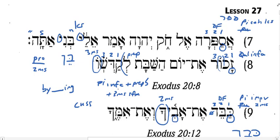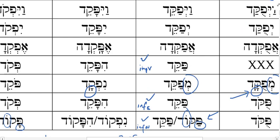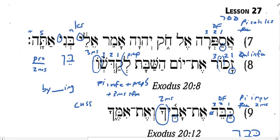Let's just remind ourselves: does the Piel infinitive construct have a Patach under root one and a doubling dot in root two? The answer is yes. Here's my infinitive construct on the principal parts page — no prefix, Patach under root one, doubling dot in root two. I would normally have a tsere here, but if I add a pronominal suffix, that's going to reduce to a vocal sheva. So this parsing matches what we're seeing in our principal parts sheet, making allowance for things tacked onto the back.